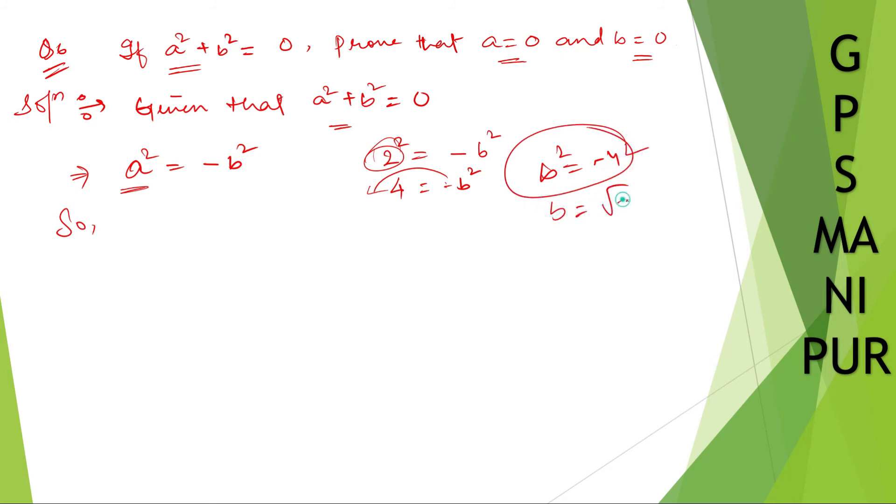b = √(-4) is not a real number, so we cannot say this is true.